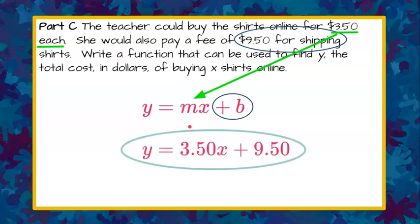We're going to rewrite this with those values. Our m is replaced with $3.50 and b, or y-intercept, is the shipping cost $9.50. So y is equal to 3.50x plus 9.50.